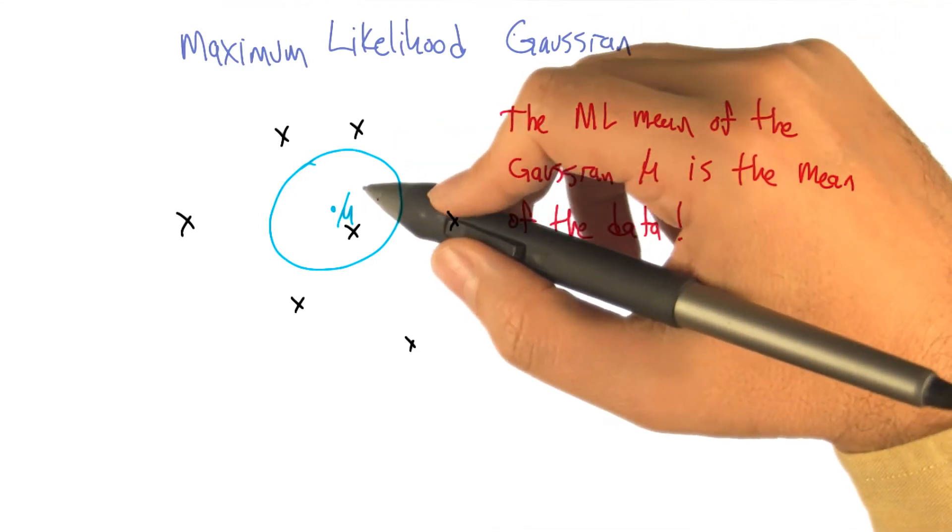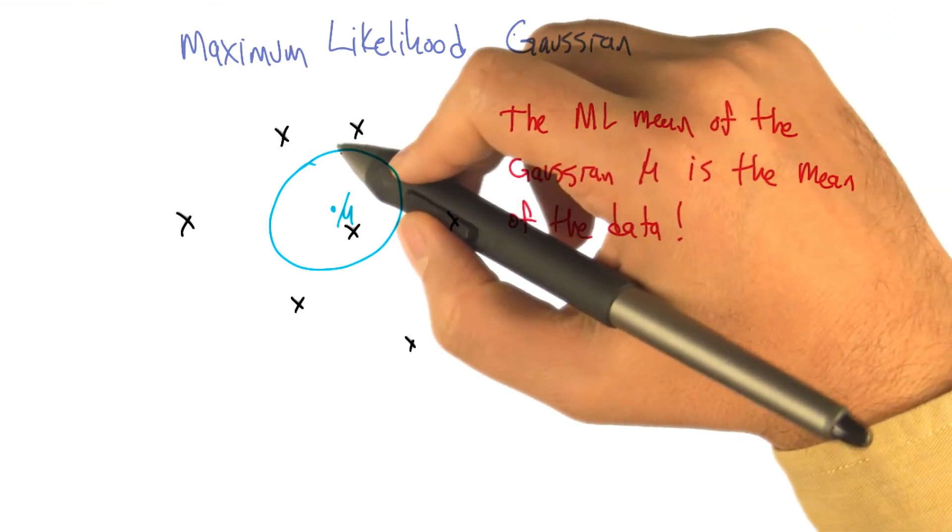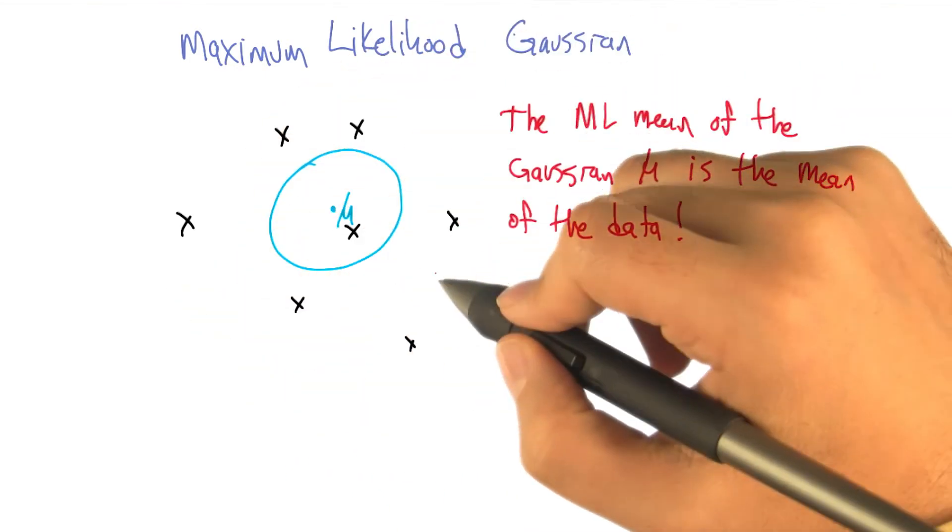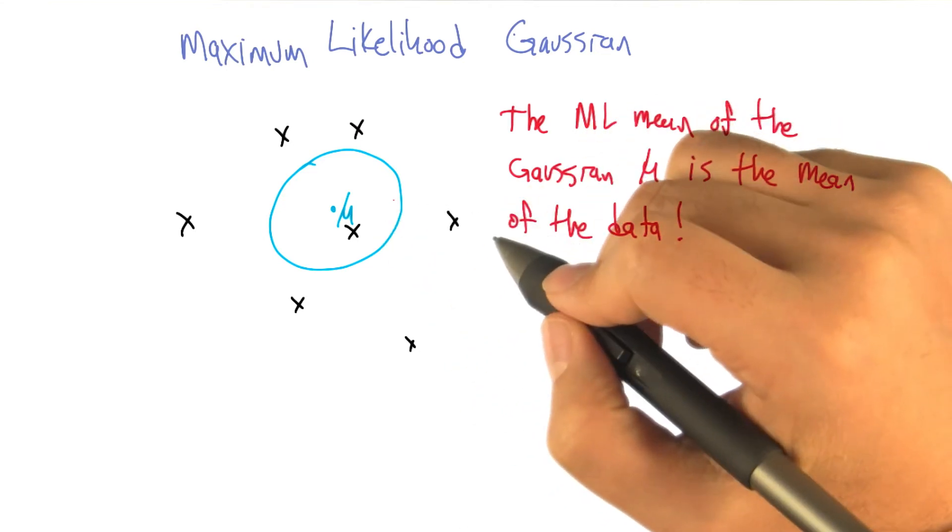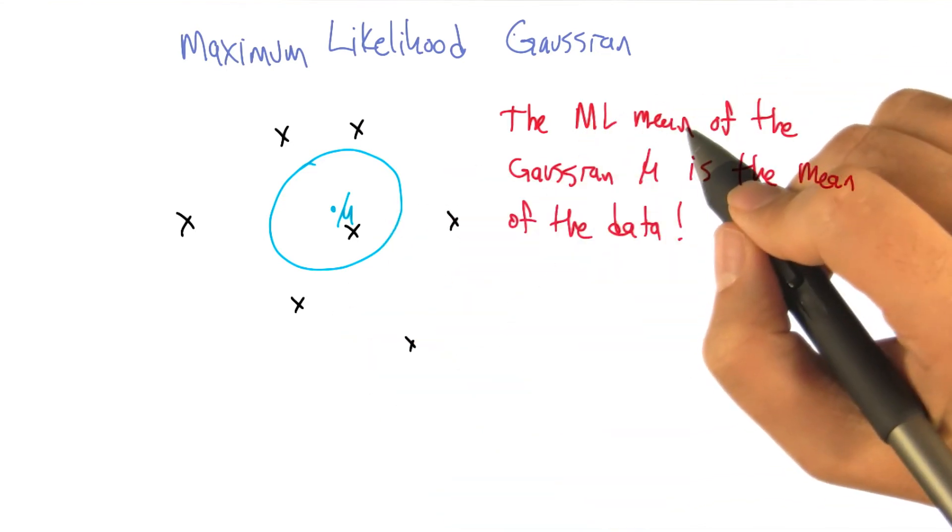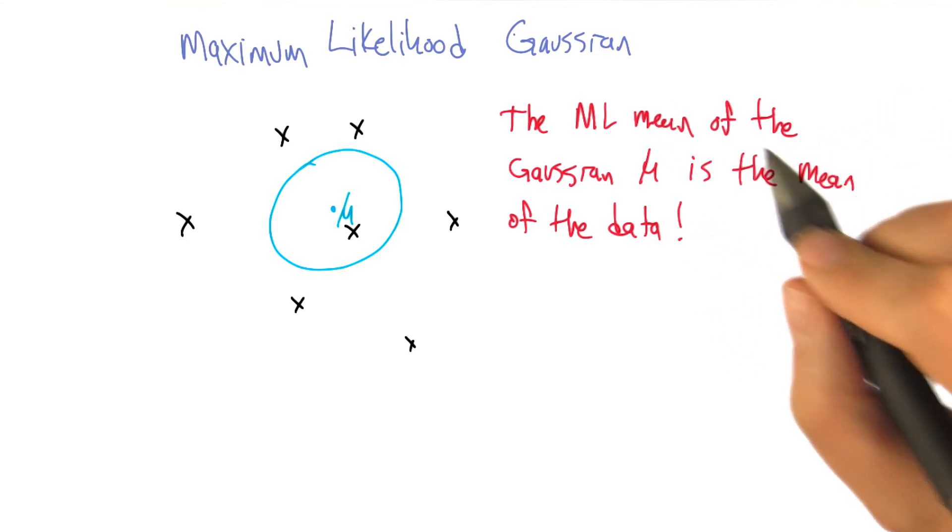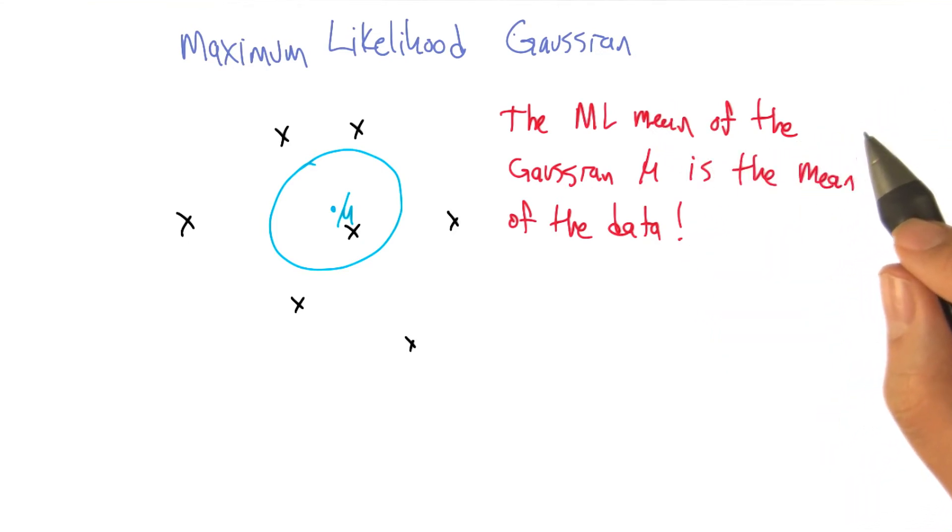So in particular, this is really easy to compute. If we know that all this data is coming from the same Gaussian, then finding the mean that maximizes the likelihood is just computing the mean of all those points. Right, we kind of just did that a few slides ago. Exactly.